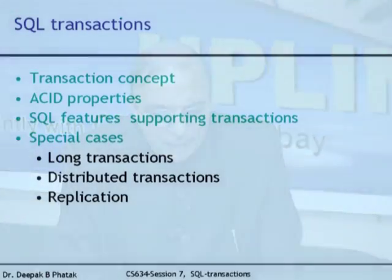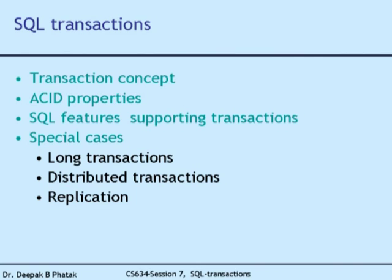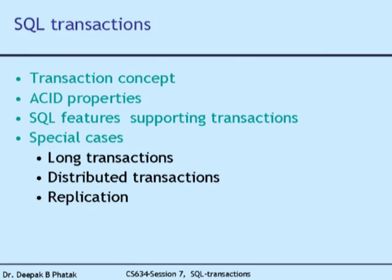Jim Gray first defined the notion of performance benchmarking — how many transactions a database application can run on particular hardware. He defined the first debit-credit transaction benchmark, and then defined various classes of transactions and the problems they may create.